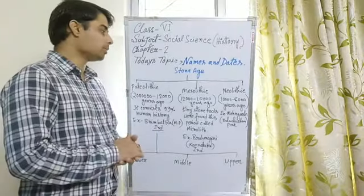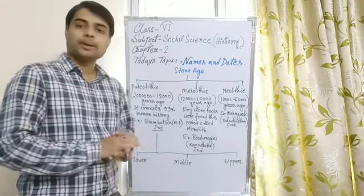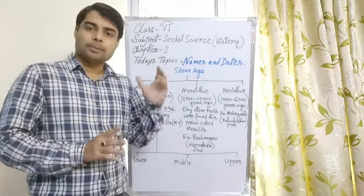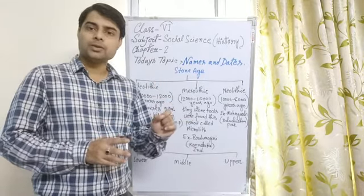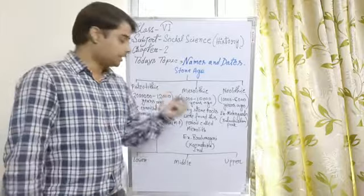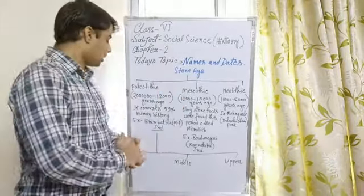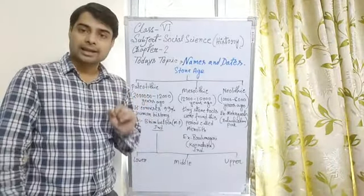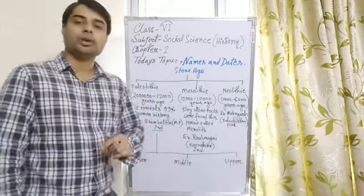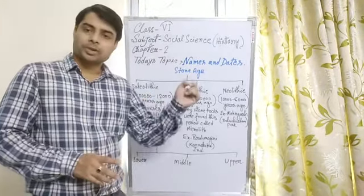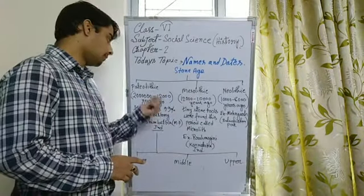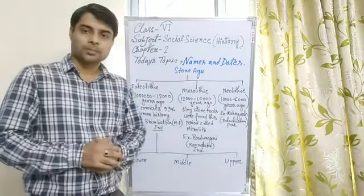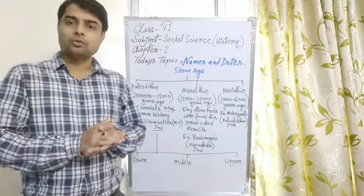Paleolithic comes from two Greek words: Paleos meaning old and Lithic meaning stone, so Paleolithic means Old Stone Age. The time period is from two million years ago, almost 20 lakh years ago, up to 12,000 years ago. This period represents 99 percent of human history, and all the major developments occurred during this time.